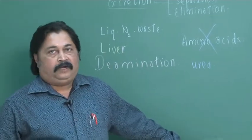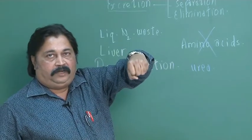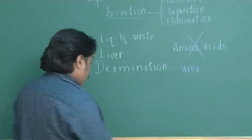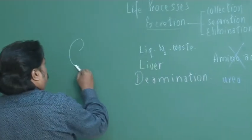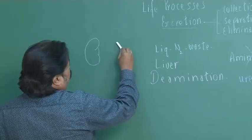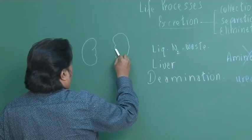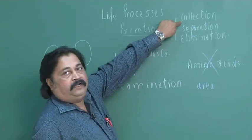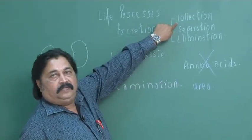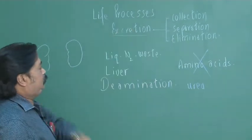This urea containing blood is brought from the liver towards the kidney. And the kidneys, what they do? They collect, they separate, they eliminate the liquid nitrogenous waste. That is excretion.